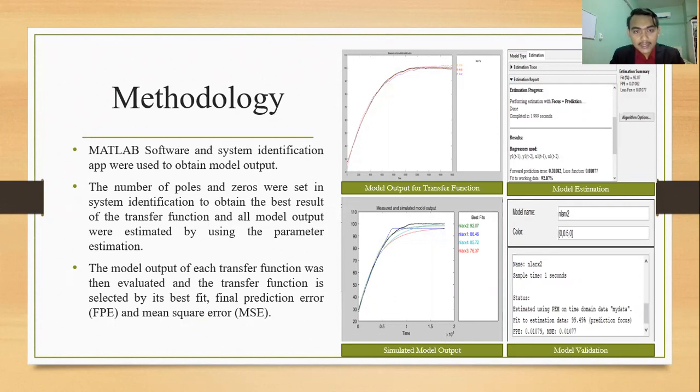MATLAB software and system identification app were used to obtain the model output. The number of poles and zero was set in system identification to obtain the best result of the transfer function and all model output were estimated by using the parameter estimation.